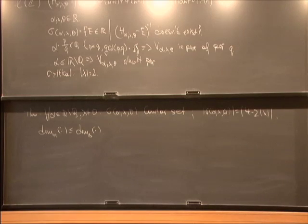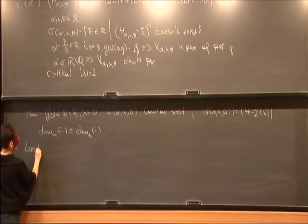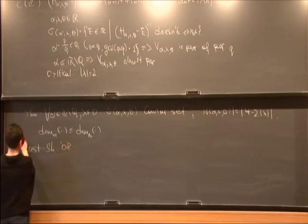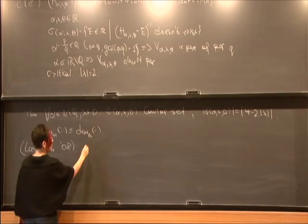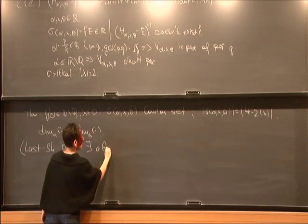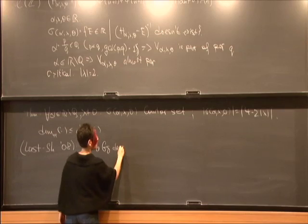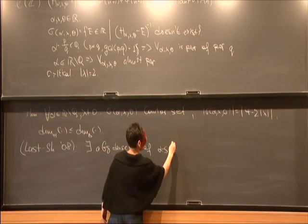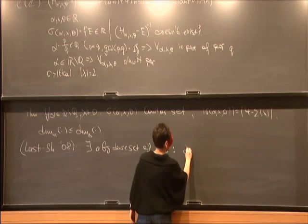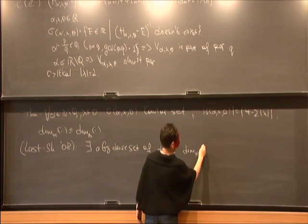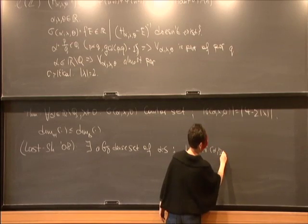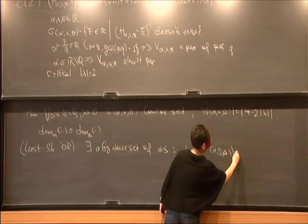The result that I want to present here is the result of Last and myself from 2008, and we proved that there exists a G-delta-dense set of alphas for which the Hausdorff dimension of the spectrum of the critical Almost-Mathieu operator is equal to 0.